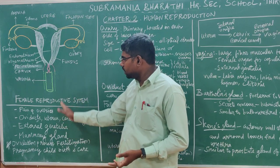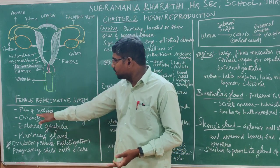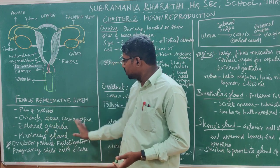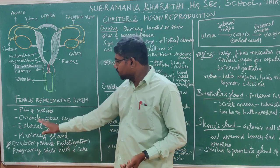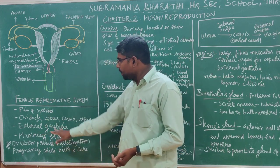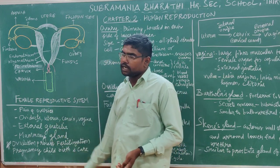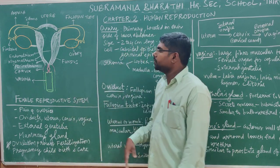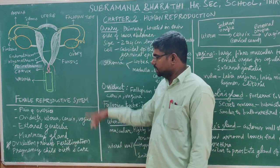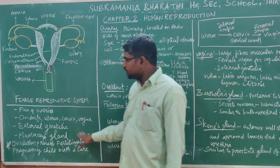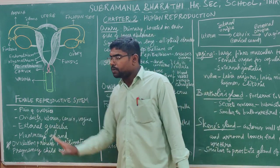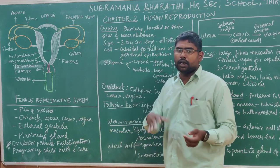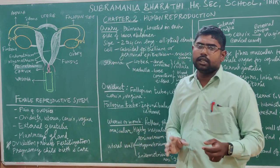To summarize, the organs are: paired ovaries, oviducts (fallopian tubes), uterus, cervix, vagina, external genitalia, and mammary glands. These together form the female reproductive system.